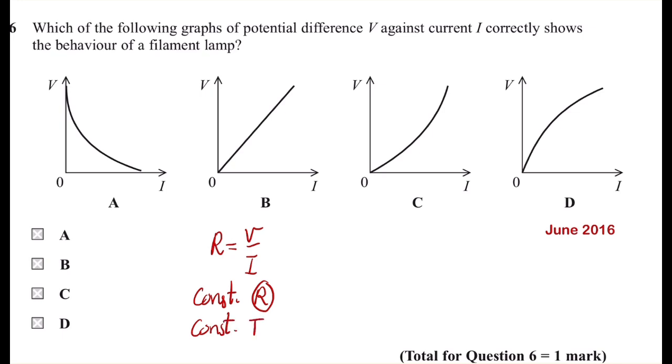...due to the interaction or collisions between the flow of electrons or the electric current and the lattice structure of the filament tungsten wire in the lamp...